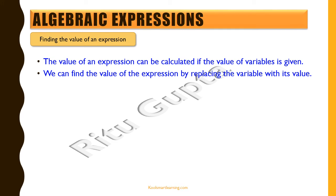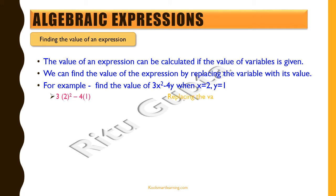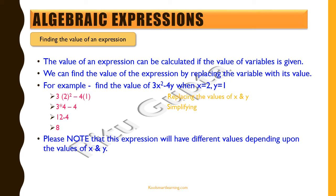We find the value of an expression by replacing the variable with its given value. For example, for the expression 3x² minus 4y, when x equals 2 and y equals 1, we replace x with 2 and y with 1: 3×2² minus 4×1 equals 3×4 minus 4, which equals 12 minus 4, giving a value of 8. Note that this expression will have different values for different values of x and y — it equals 8 only when x equals 2 and y equals 1.